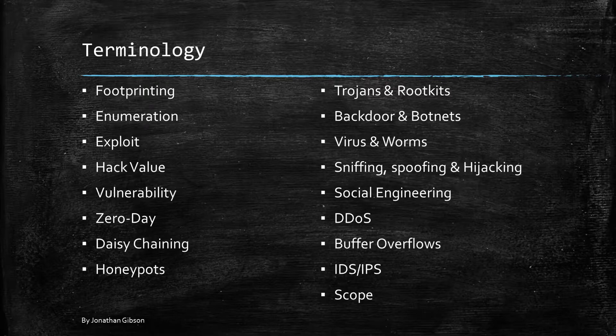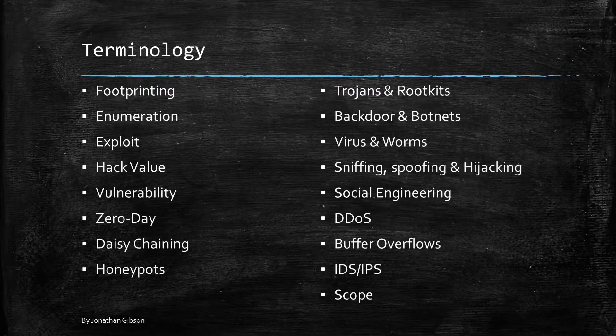Daisy chaining: attackers often gain control of other systems and use them for malicious activities, making it difficult to identify the attacker because of the use of other machines. Oftentimes, machines are on the same network or on the outside of the network.